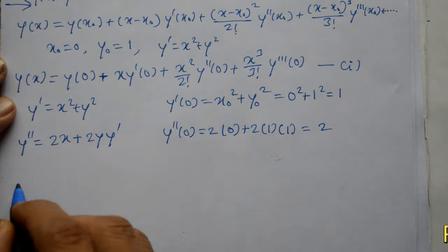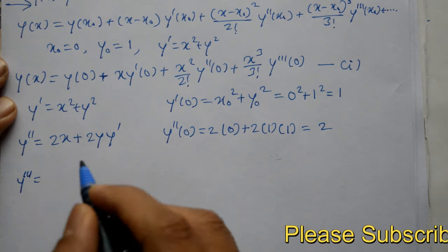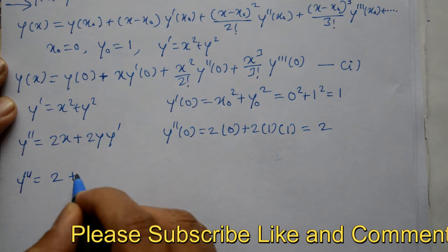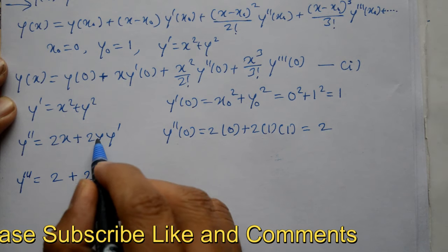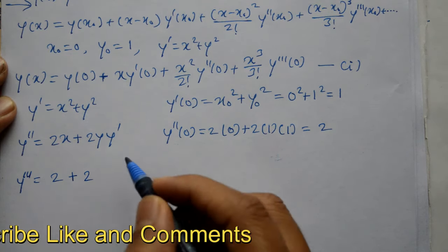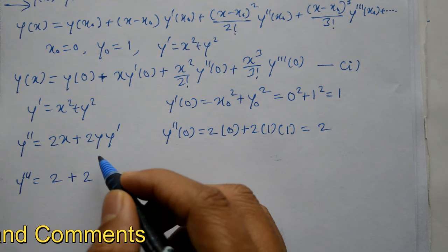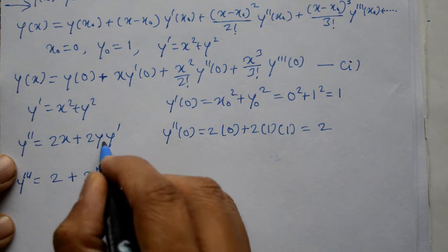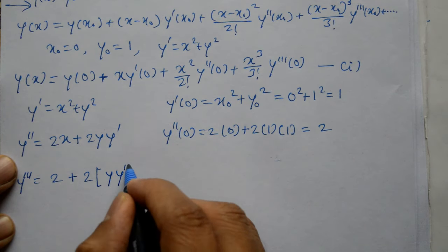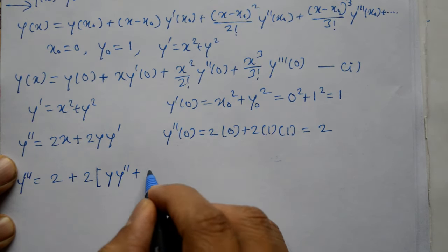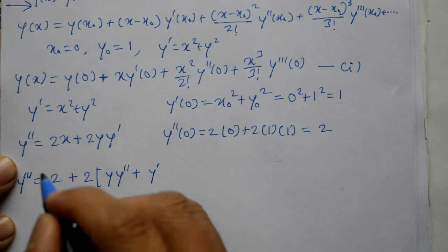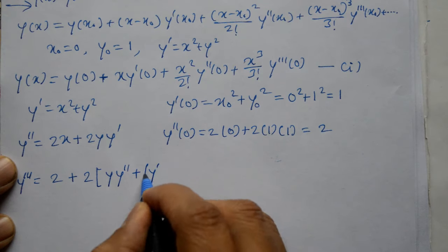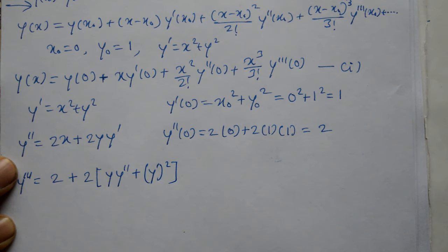Now baad me y triple dash hai — again differentiate y'' with respect to x. 2x differentiate kya to 2 ayega, plus 2 bahar lekenge y into y dash — product formula use karna hai. So y''' = 2 + 2(y·y'' + y'·y') = 2 + 2(y·y'' + y' whole square) — yeh thara ayega.